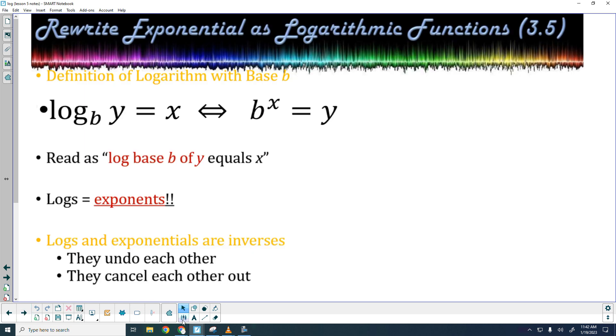This first thing that I have right here is going to be super important. The definition of a log with base B. Log base B of Y equals X can be rewritten as B to the X equals Y. Your base of the logarithm is the same as the base of your exponential. X, what it equals for the log, is your exponent. And Y, what you're taking the log of, is going to equal Y. Basically, these are inverses of each other. They undo each other.